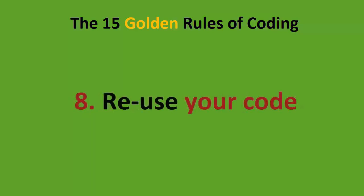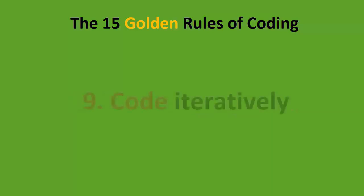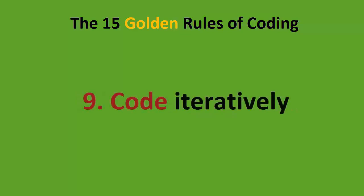Number eight: reuse your code. This comes back to the macro book. If you write a brilliant piece of code or a brilliant routine that does something, keep it in your macro book. There's no point in writing it again a year later — just go back and reuse the code that you've already written.